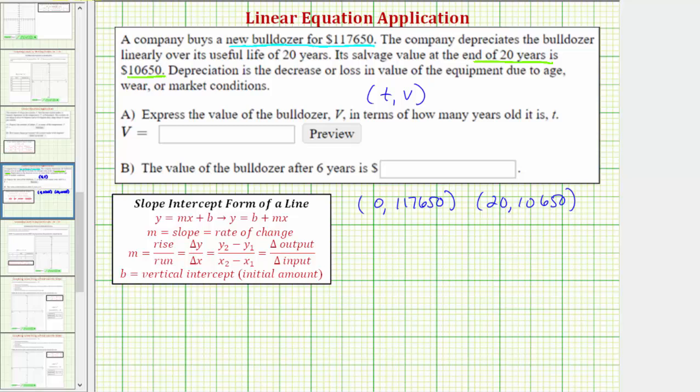So let's find the equation in the form, let's use this form here, so we'd have V, the value, equals B, which is the vertical intercept or initial amount, or in our case the starting value, plus M times T, where T is the age in years.